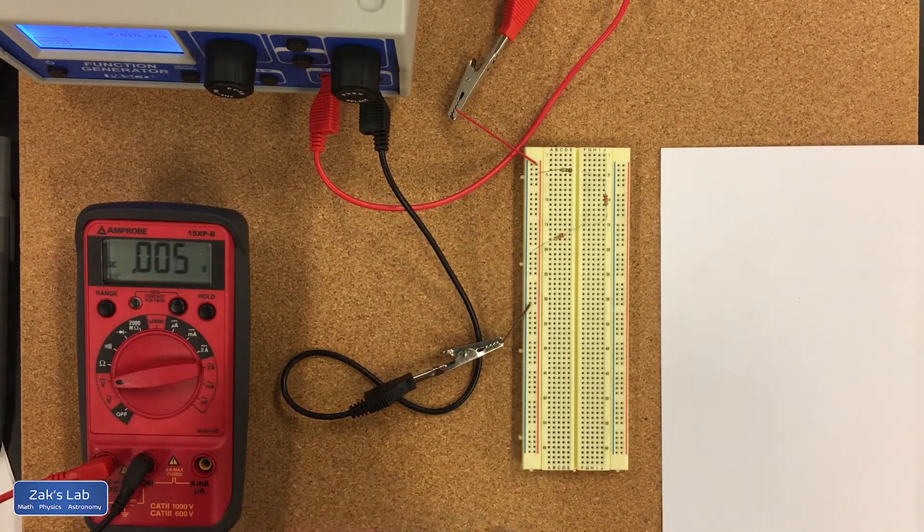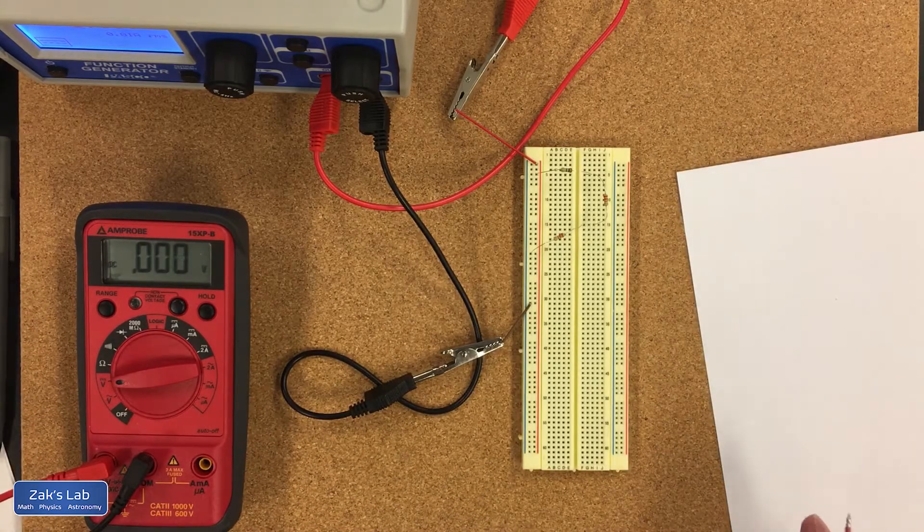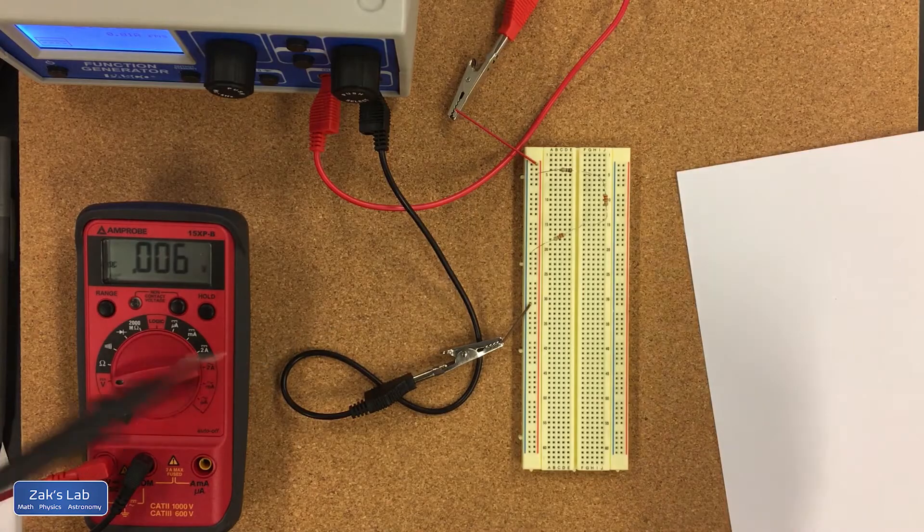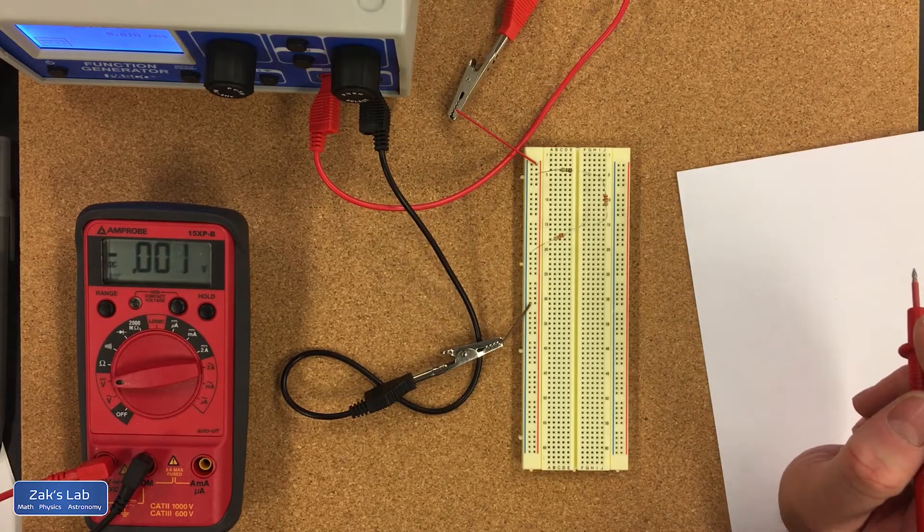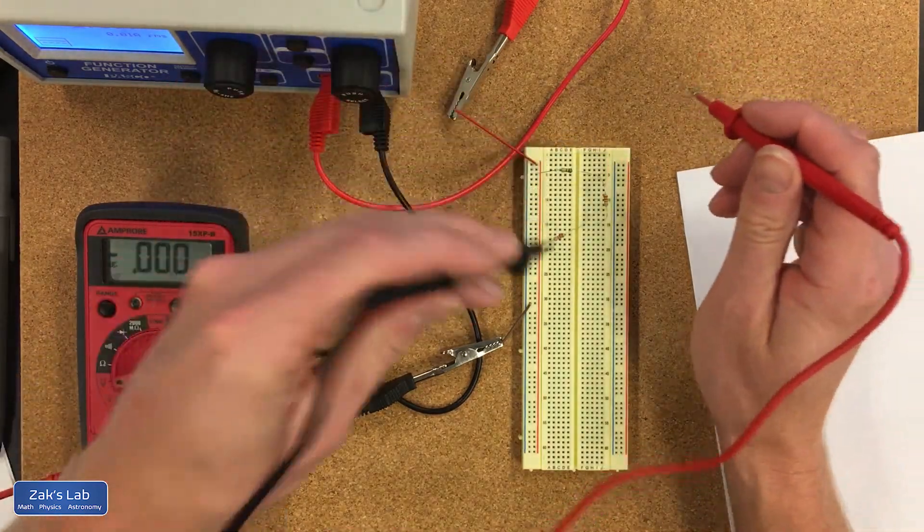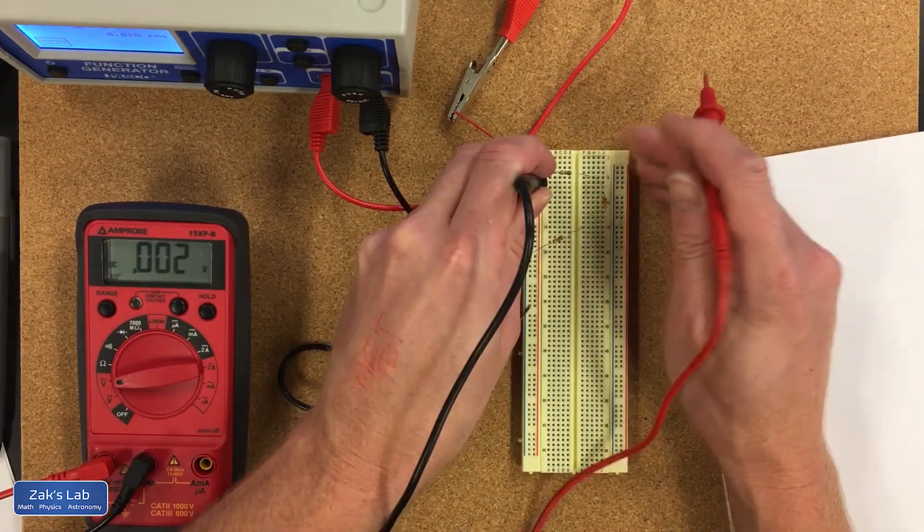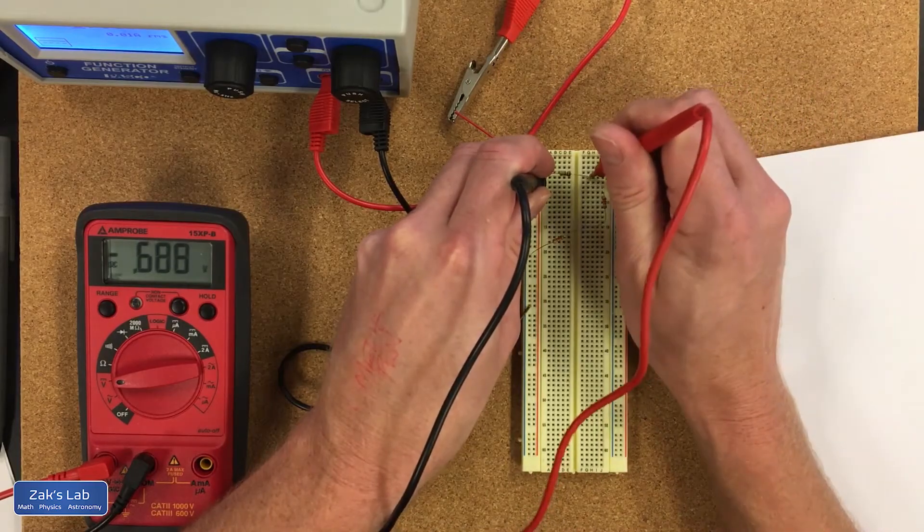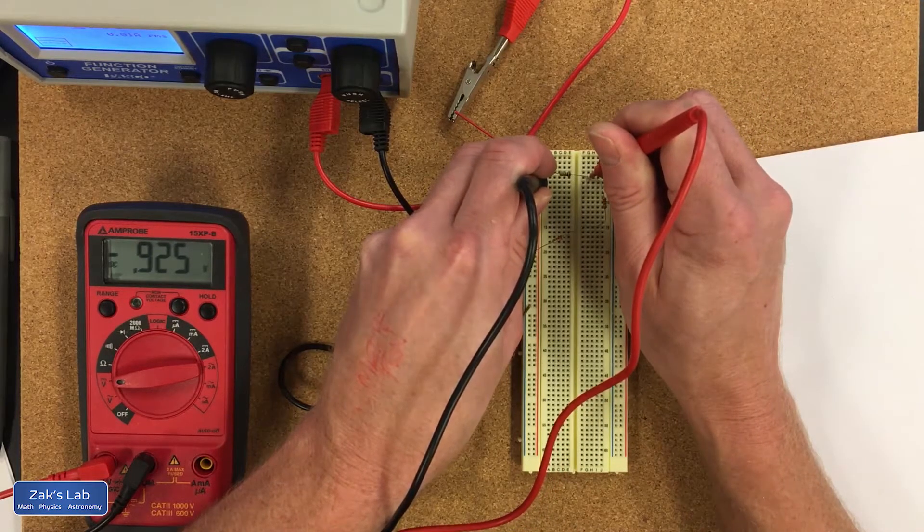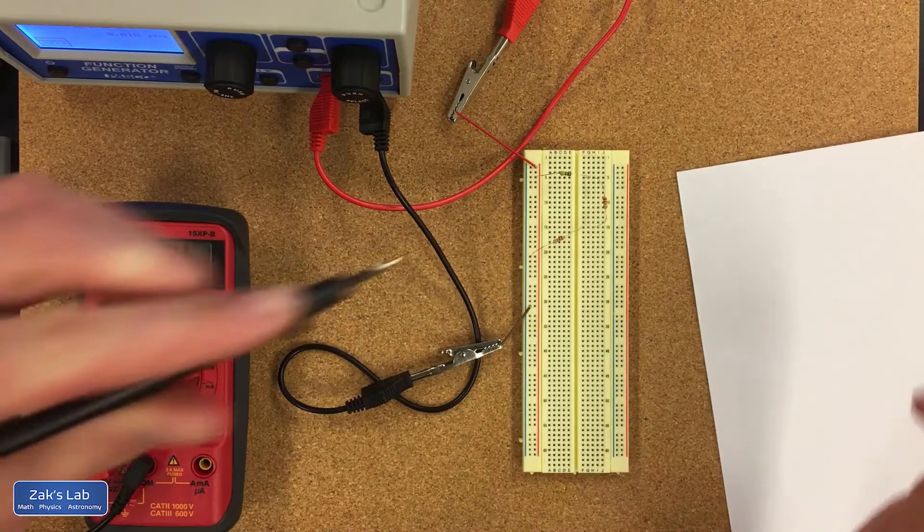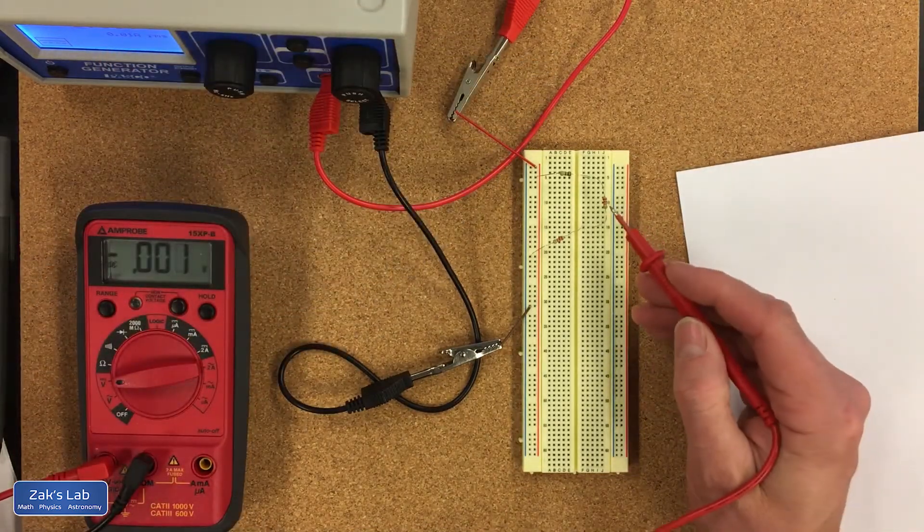So Vab was the voltage across this first resistor and I'm going to go from the high side of that resistor to the low side, and I'm getting 0.925 volts off the multimeter.